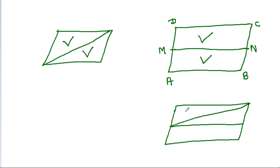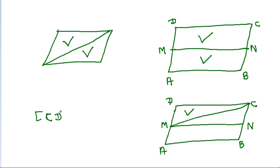So, for parallelogram ABCD with midpoints M and N, the area of CDM will be equal to 1/4 times the area of ABCD.